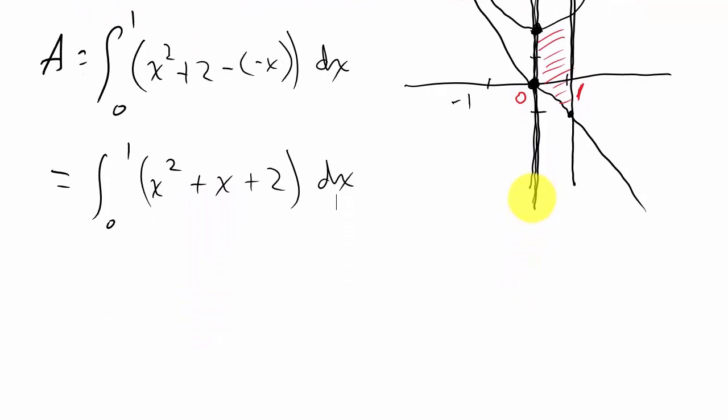All right, and so now we're ready to integrate. So this is going to be 1 third x cubed plus 1 half x squared plus 2x. And I'm going to evaluate that from 0 to 1.